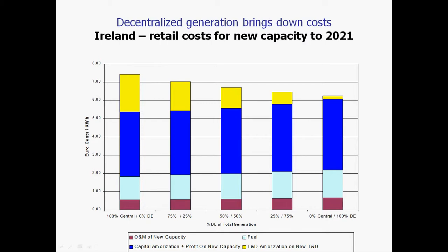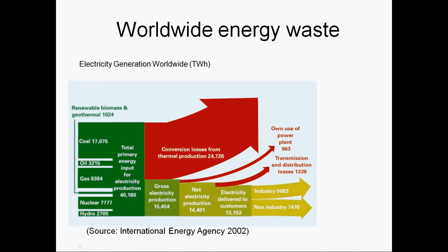One of the factors that's driven decentralized energy is the enormous amount of waste energy from conventional centralized thermal generation. When fuel is burned in a thermal power plant, only about 30 to 40% of the energy is actually transformed into electricity. The other 60 to 70% goes up the smokestack or cooling tower as waste heat. A diagram showing total worldwide energy use reveals that more than 50% goes into the air as waste.